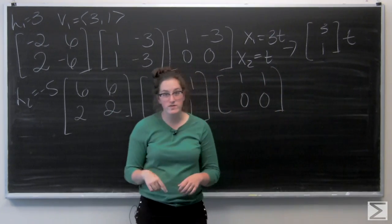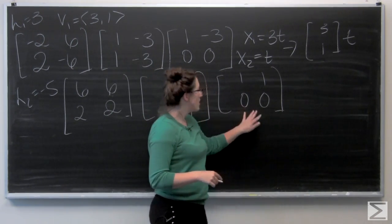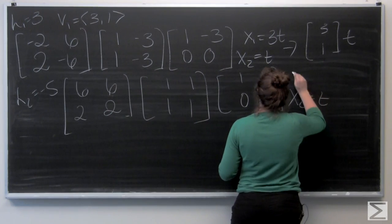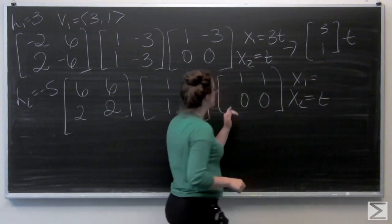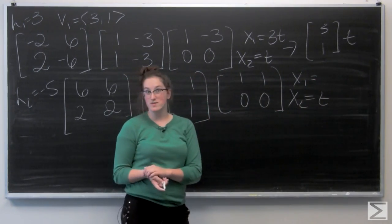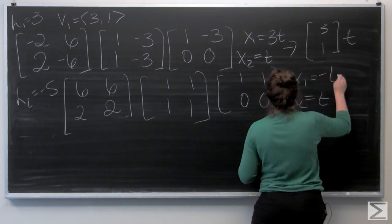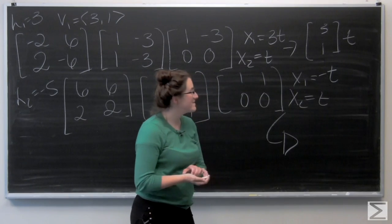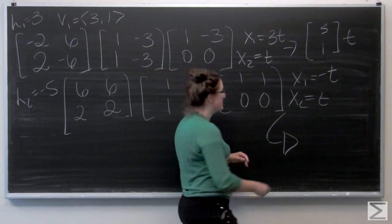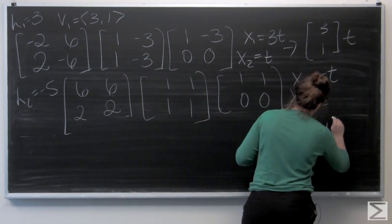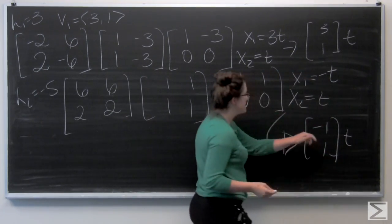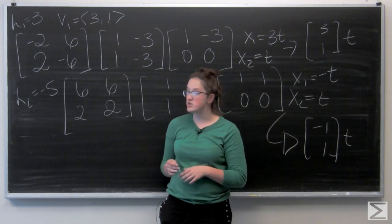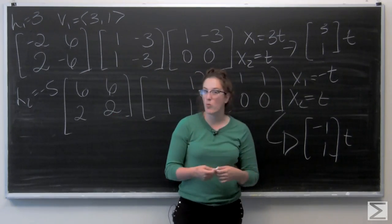And I'm looking at a free variable for x2. I'm going to call it t. That means x1 plus t equals 0, x1 equals negative t. I'm going to write this in vector form as the vector negative 1, 1 times t. Which means that v2, the eigenvector for lambda 2, is just negative 1, 1.